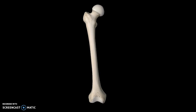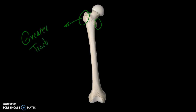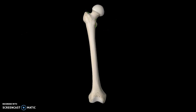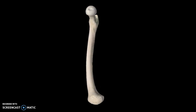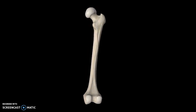Now we can move down to the trochanters, which are these two pointy structures. The top one is what we call the greater trochanter, and the lower one is going to be the lesser trochanter. Now, we are looking at the anterior view, so this line here is what we call the intertrochanteric line. If you look at the posterior view of the femur, these two are what we call the intertrochanteric crest.